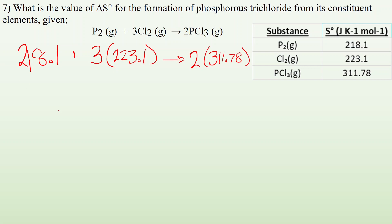So the sum of my reactants is 887.4. And then my products is a total of 623.84. So again, I start at a bigger number. I end up at a smaller number. So I know my change is going to be a negative.